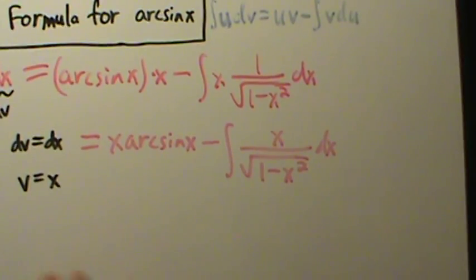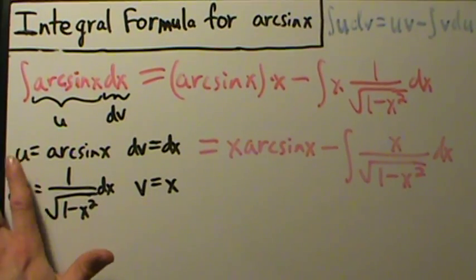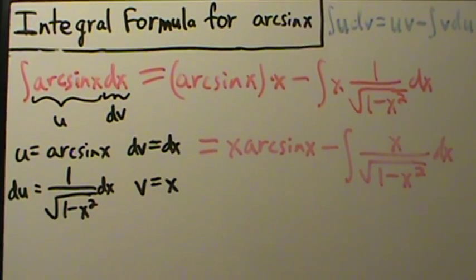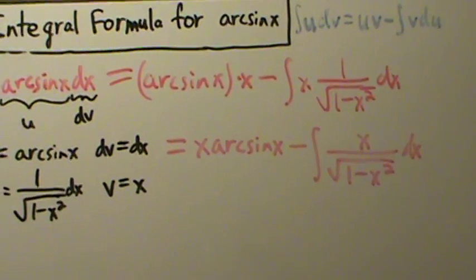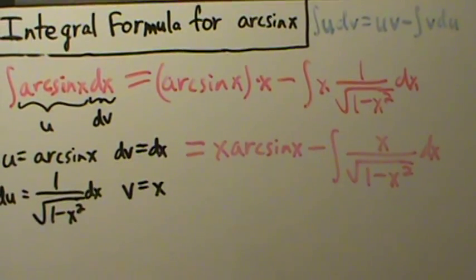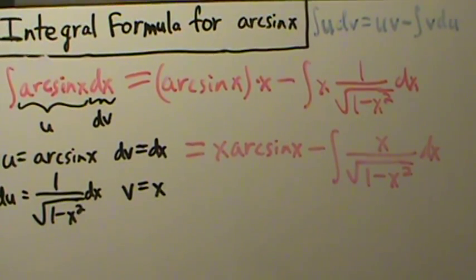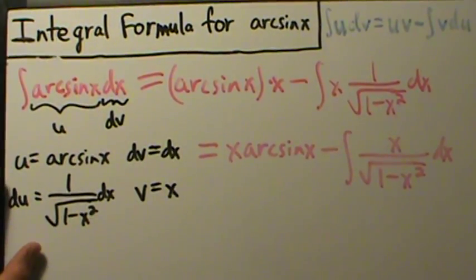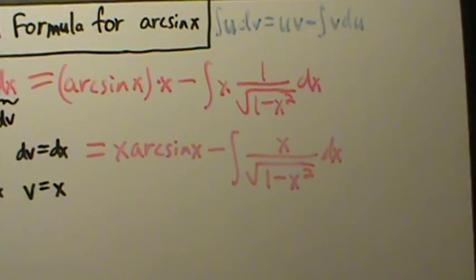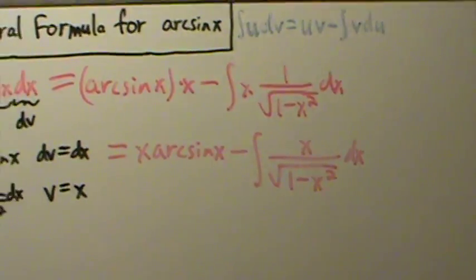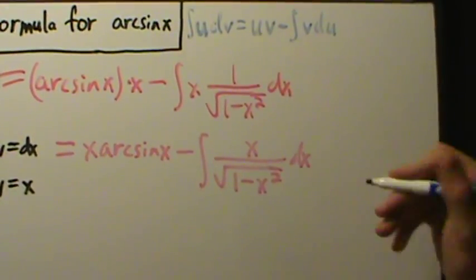When we do substitution, we want to pick a substitution variable. But we already used u in integration by parts, so we shouldn't use the same variable again — it's mathematically incorrect to use the same variable for two different things. So instead of u, since we already used u and v, let's use t.